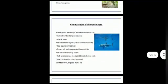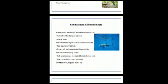Characteristics of Chondrichthyes. Cartilaginous skeleton. Male intermittent organs. Placoid scales. Teeth not fused to jaws. Lipid filled livers. Fin rays soft and unsegmented. Swim bladder and lung absent. High concentration of urea and trimethylamine oxide.